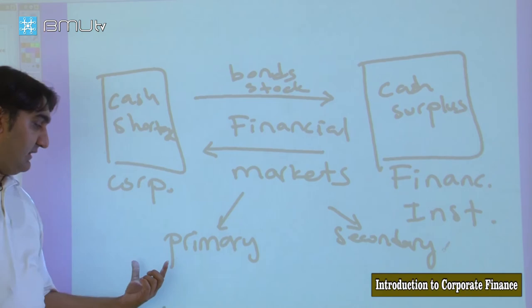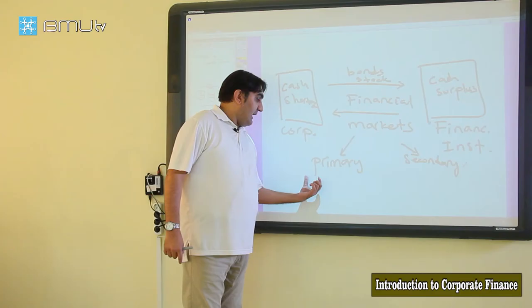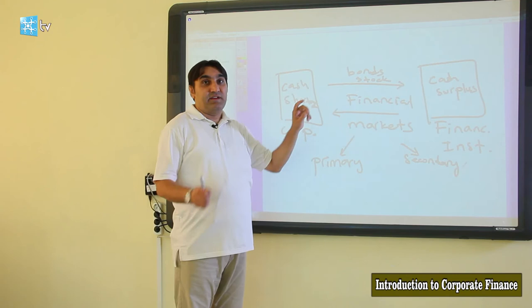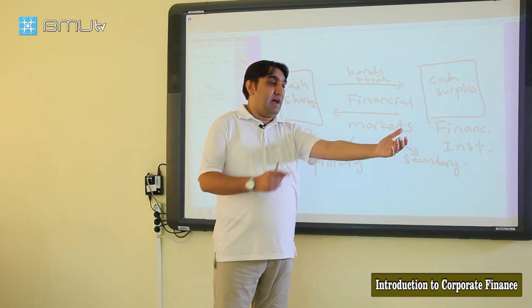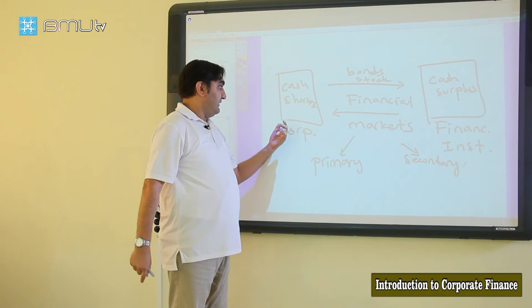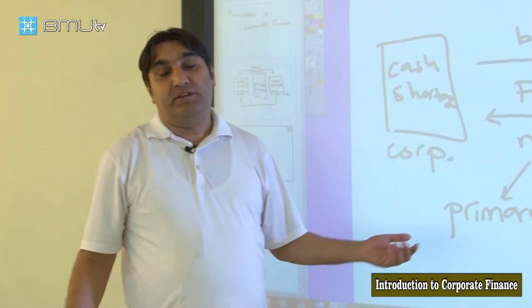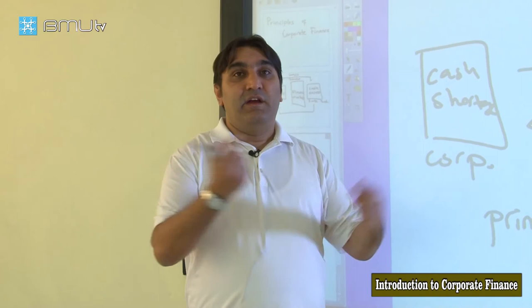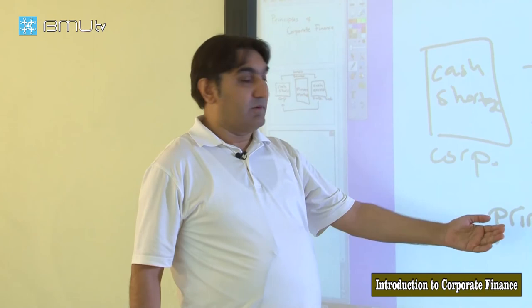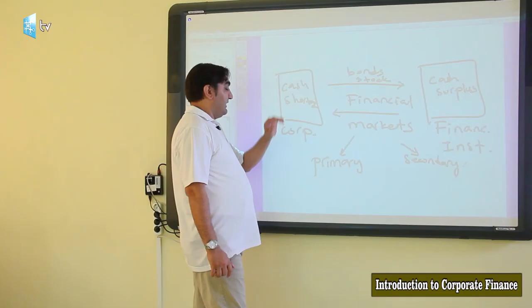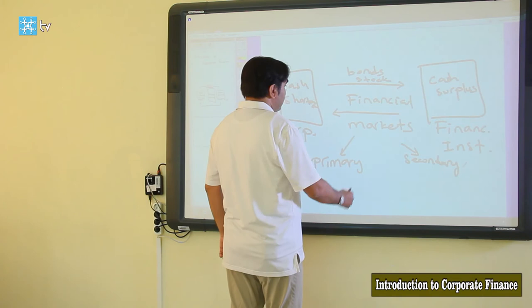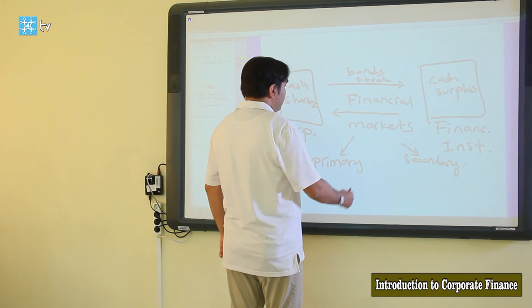The primary market is where transactions happen between the company and the investor for the first time — the company issues stocks to investors and investors buy stock directly from the company. These actions happen on the primary market. The secondary market is where stocks and bonds trade between investors — one investor may buy stock from another investor, not from the principal company.